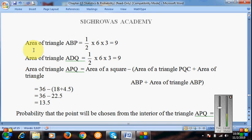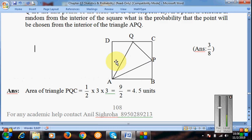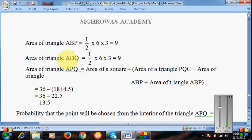Same way, triangle ABP: half 6 into 3, and then ADQ: half 6 into 3. Both areas are 9, 9. Now, which was our required triangle, triangle APQ?